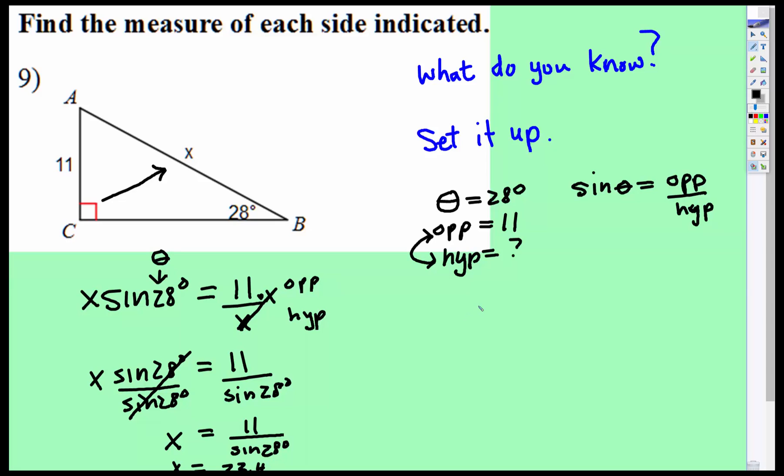I want to show you one more way. So if we have sine of 28 degrees is equal to 11 over x, remember sine of 28 degrees would be over that invisible one. Well, you could actually just flip both sides. If you flip one side, you can flip the other.